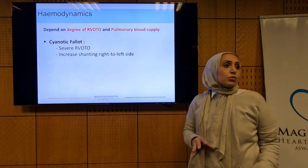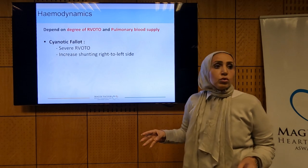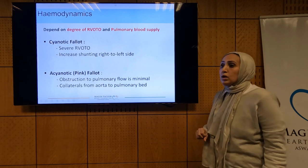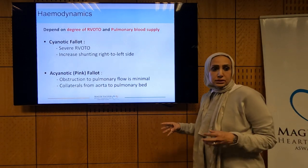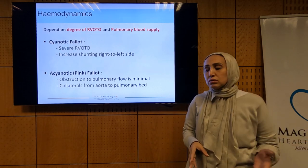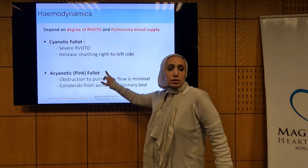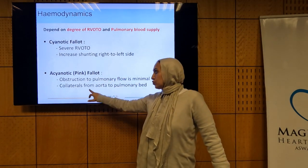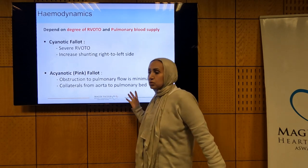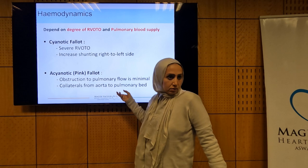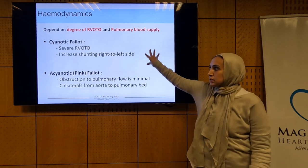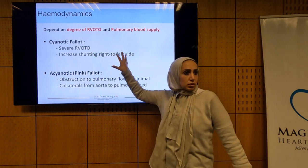The hemodynamics of Tetralogy of Fallot cover a wide spectrum from cyanotic Fallot to pink Fallot. Both depend on the RVOT obstruction and the magnitude of right-to-left shunt. The pink Fallot usually has another source of pulmonary supply, such as collaterals or a duct. The majority of Tetralogy of Fallot presents as cyanotic.